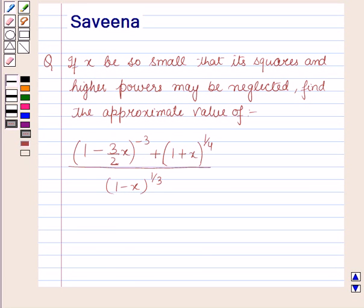Hello and welcome to the session. In this session we will discuss a question which says that if x be so small that its squares and higher powers may be neglected, find the approximate value of (1 - 3/2 x) raised to power minus 3, plus (1 + x) raised to power 1/4, whole upon (1 - x) raised to power 1/3.